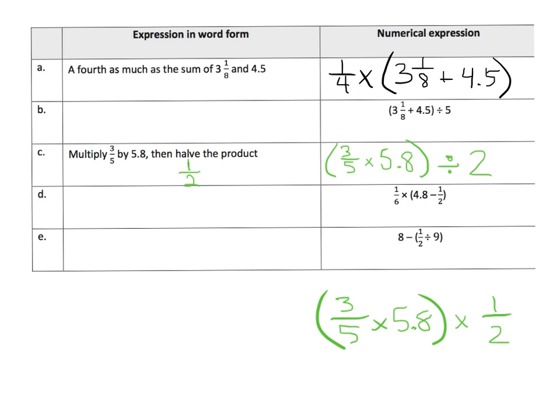And then right here. So here we've got a difference. We need to find the difference first then multiply by 1 sixth. So one way to write that is you could say 1 sixth as much as the difference between 4.8 and, oh I don't like that, that looked like a plus sign, and 1 half. So it's 1 sixth times the difference of these two numbers.